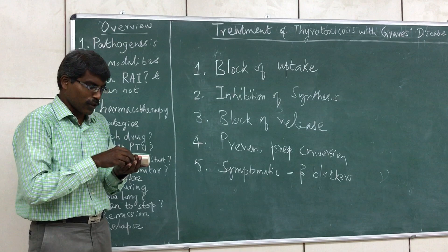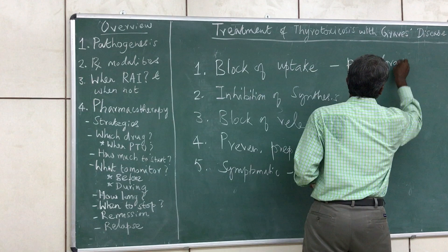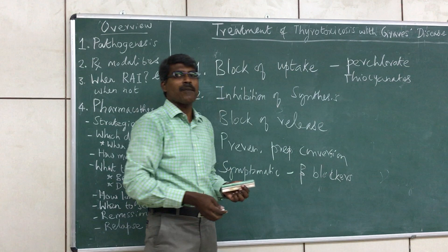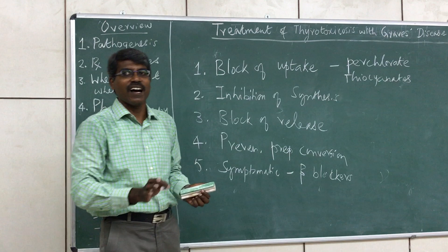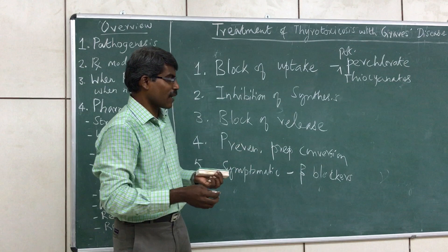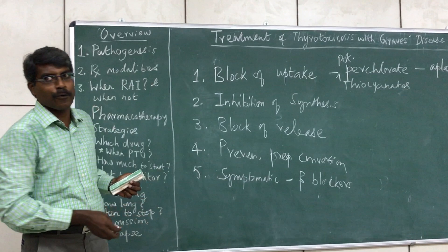Blocking the uptake of iodine can be done by perchlorates and thiocyanates. Cruciferous family vegetables like cabbage and cauliflower contain thiocyanates and can block iodine uptake, causing hypothyroidism with excess intake. However, these are not used in therapy. Potassium perchlorate is available but not used clinically because it causes aplastic anemia. So this strategy of blocking iodine uptake is not used clinically.